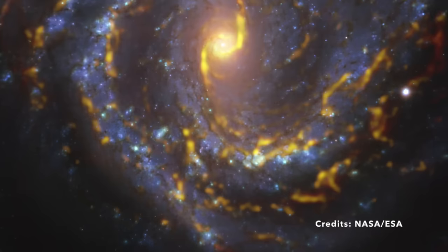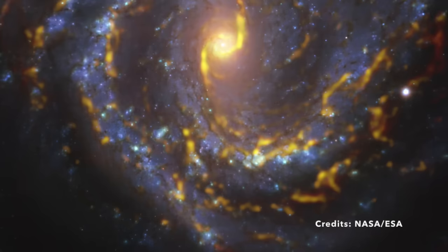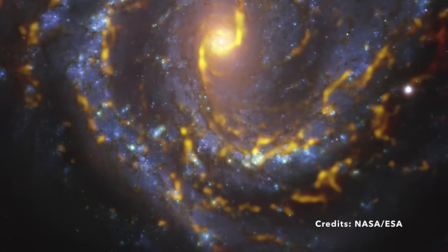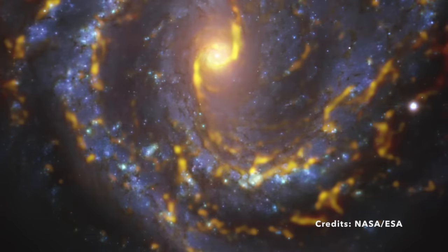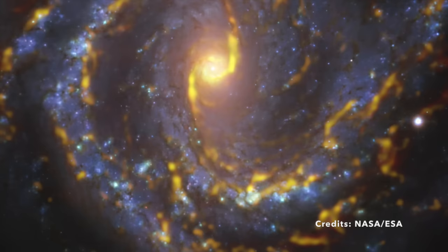First things first, what exactly is a spiral galaxy? Picture a colossal disk made up of stars, gas, and dust, all spinning gracefully around a central core. The swirling arms of this disk give it its spiral name. And NGC 4303 is a prime example of this fascinating cosmic structure.